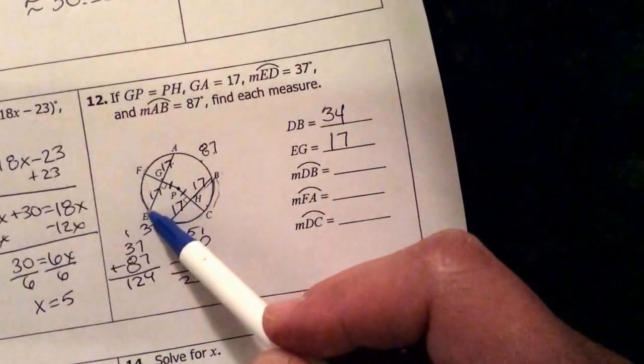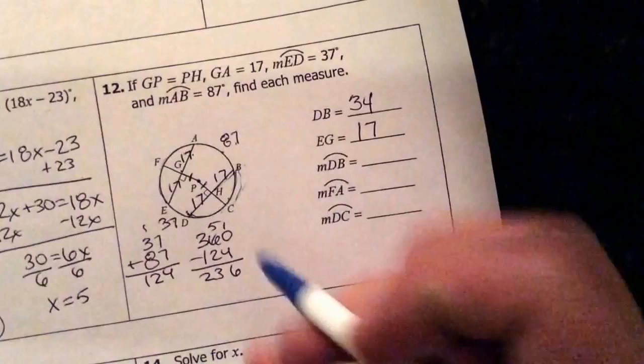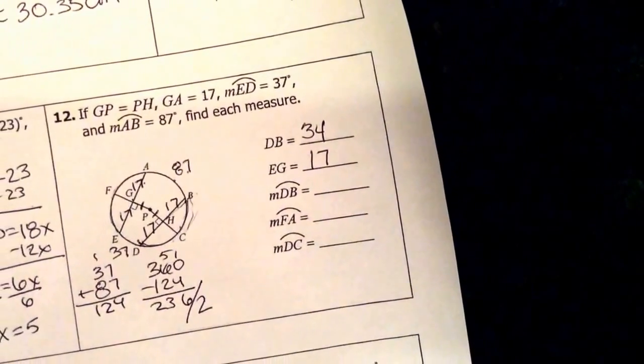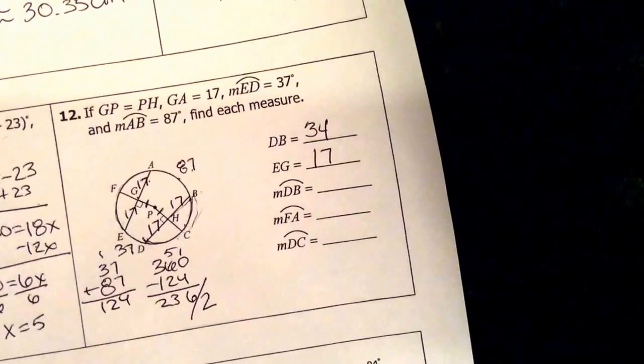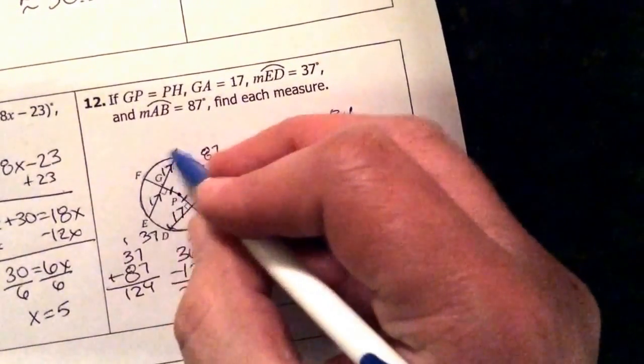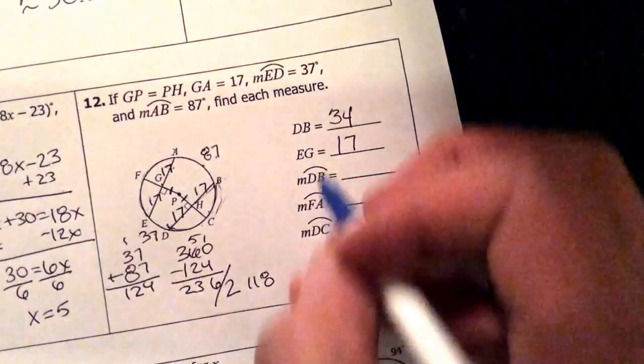236. However, you've got to keep in mind we have two arcs here that equal 236. So I have to cut that number in half. It's going to be 118. So that means that each of these arcs, DB and EA, are 118.